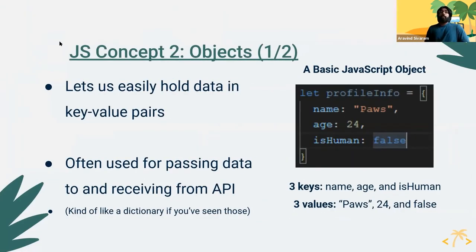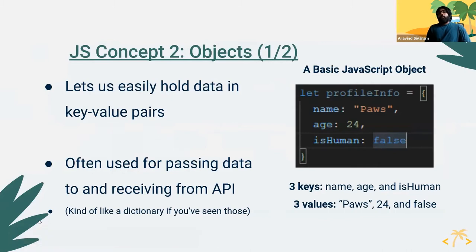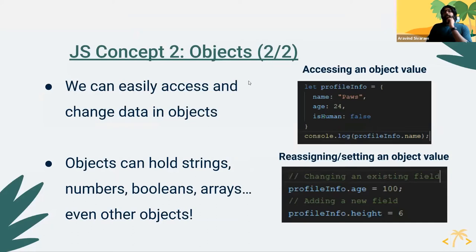Another important thing you'd want to know in JavaScript, especially working with React and APIs, are objects. In JavaScript, we represent objects using key-value pairs, kind of like a dictionary in Python or a hash map in Java. The key is the name of the specific object value, and the value is the actual data associated with that key. You'll typically use objects a lot when you're making API calls. You can directly modify values in an object and store any type of primitive value — integers, Booleans, strings — you can even store other objects and arrays as needed.